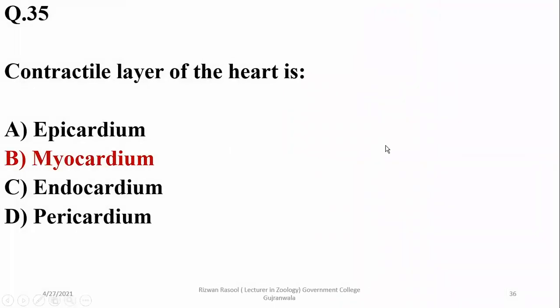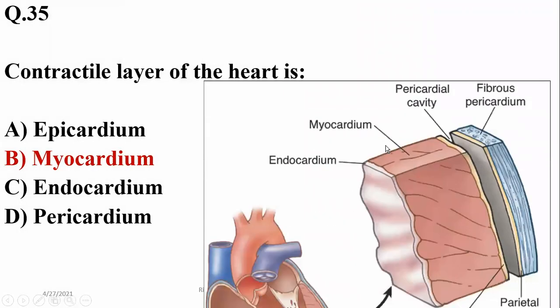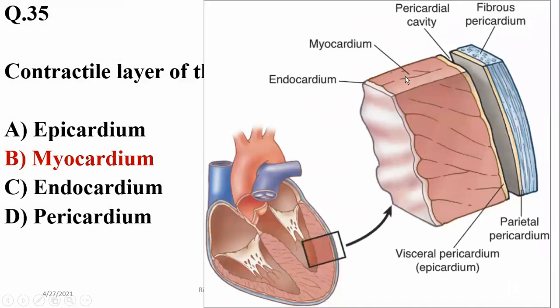Question 34: the graveyard of red blood cells is the spleen. The contractile layer of the heart is the myocardium, which is also the thickest layer and possesses cardiac muscles responsible for contraction of the heart.